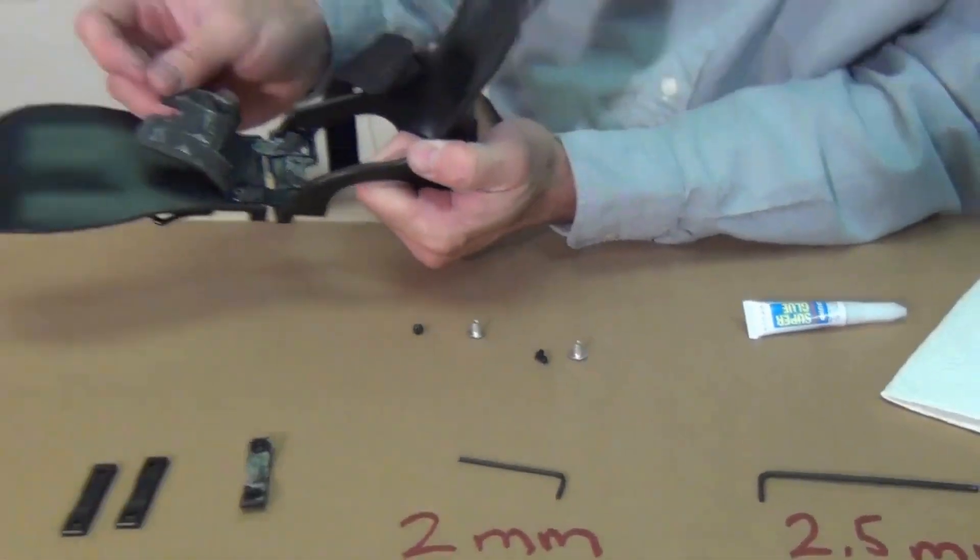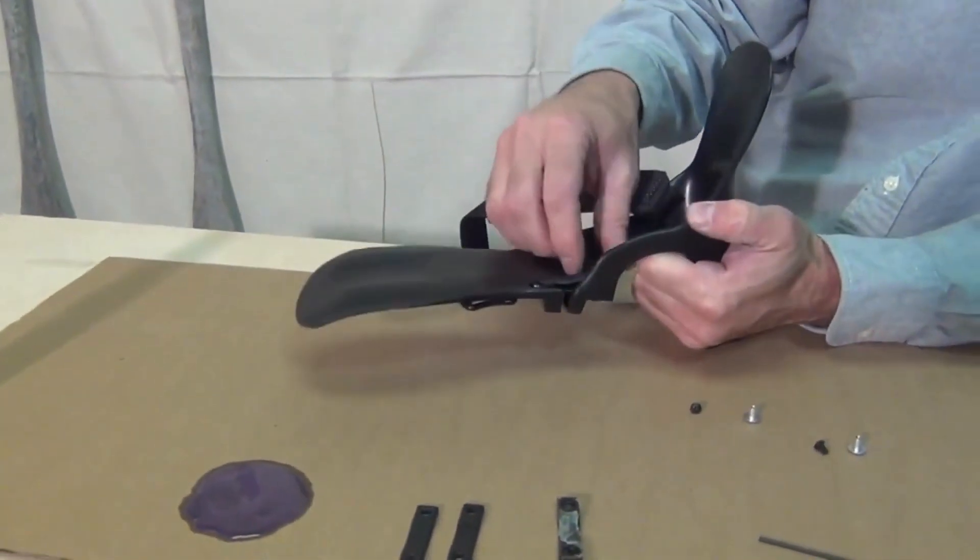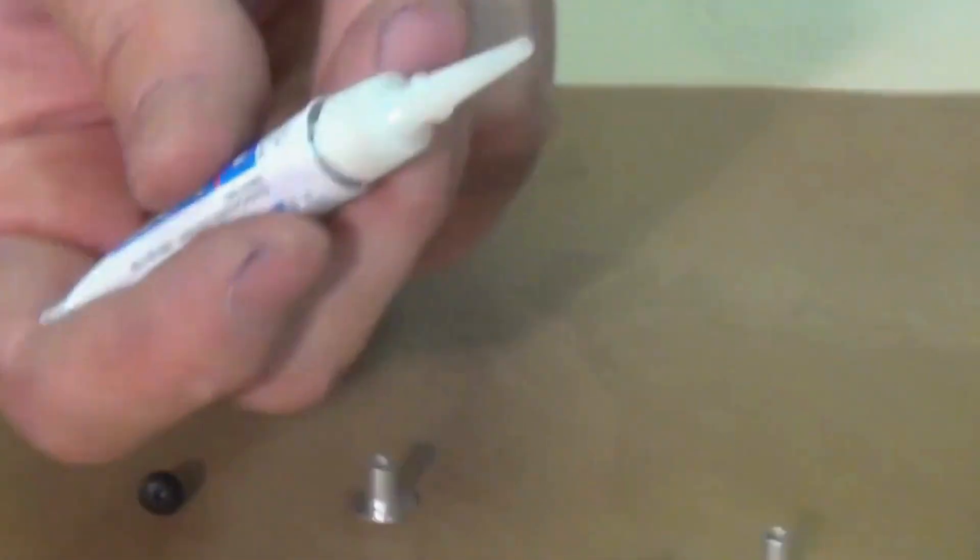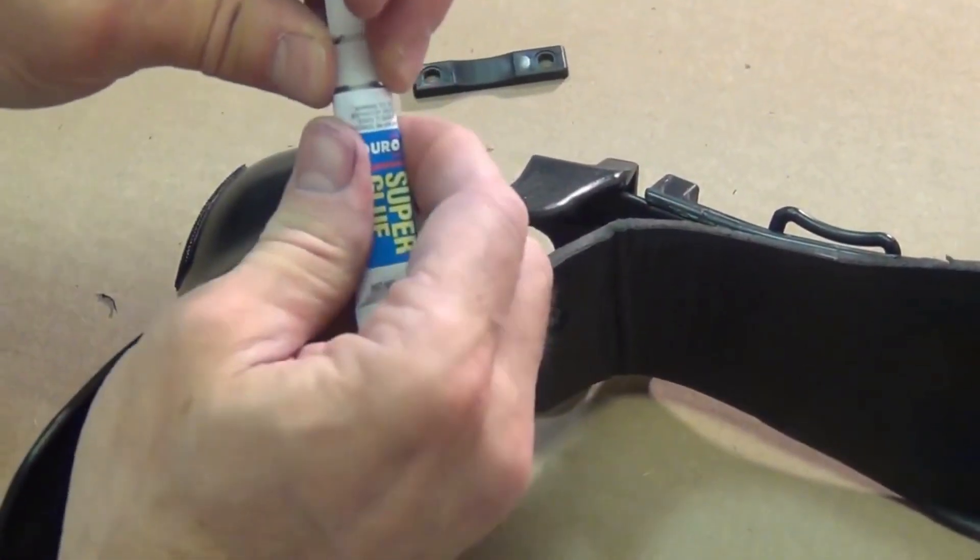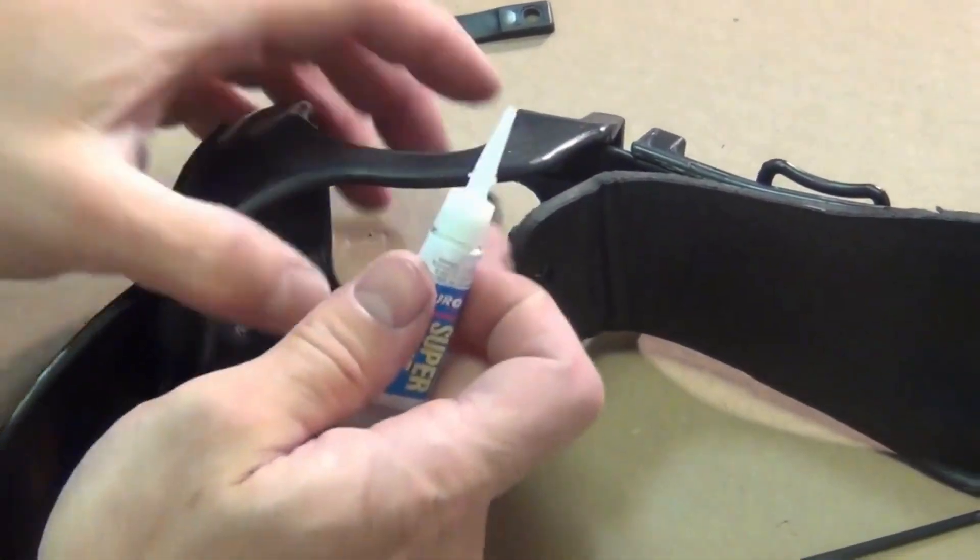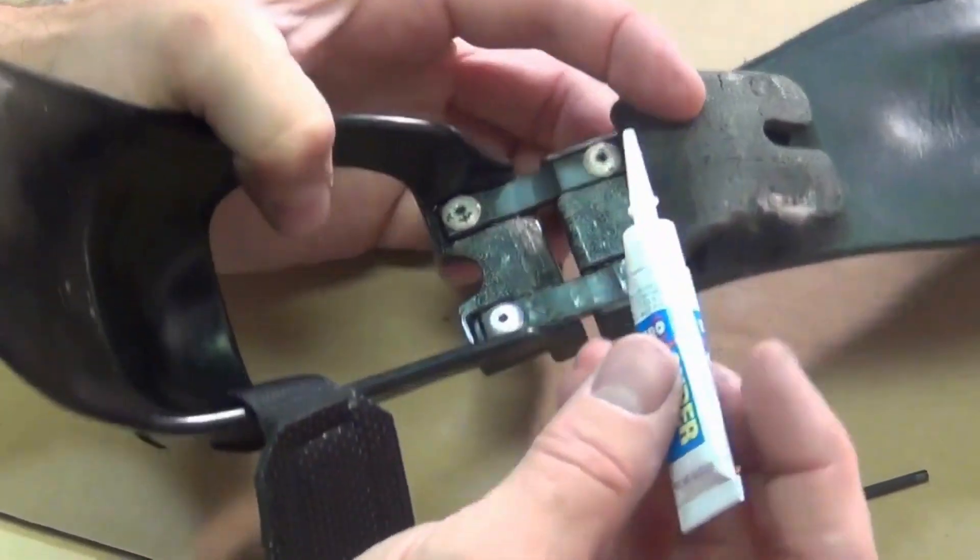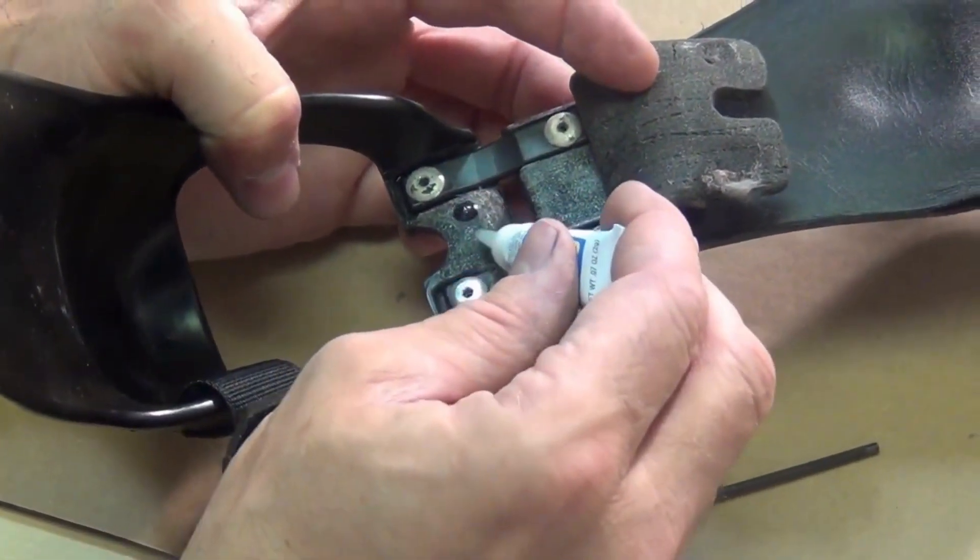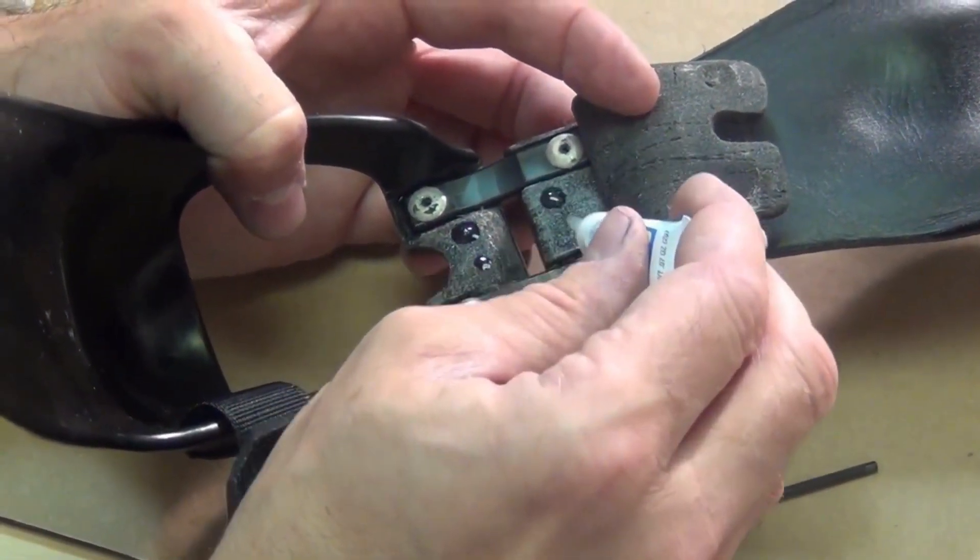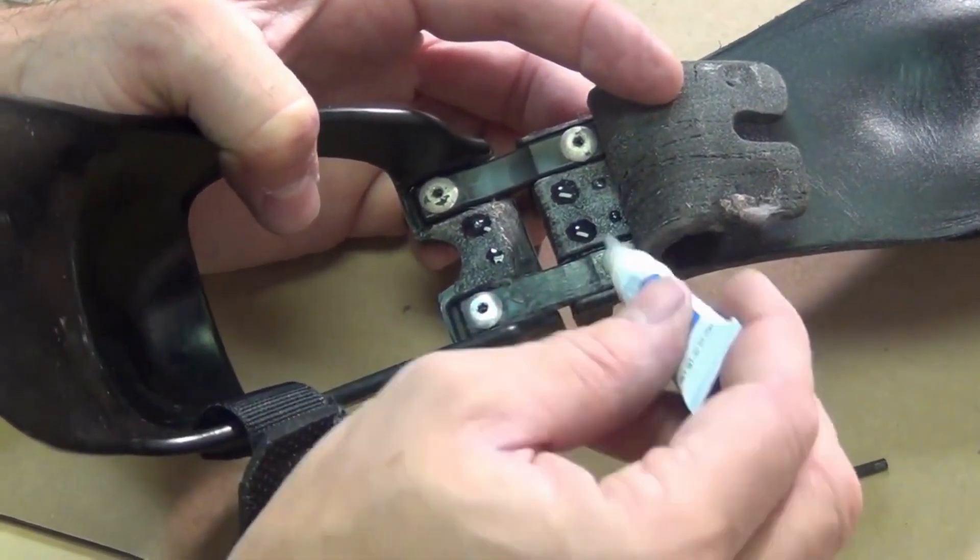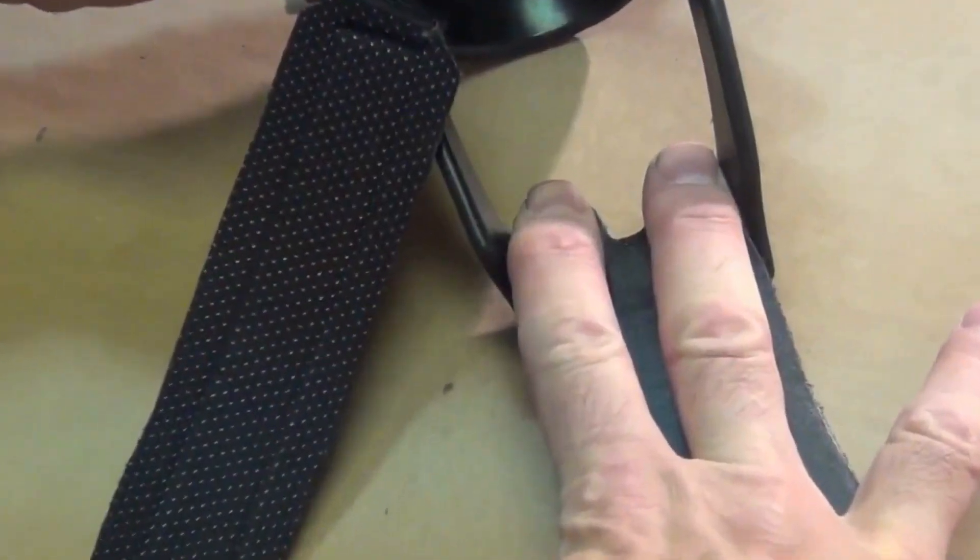Now we're left with this problem here. So we just want to stick that back down. At the hardware store, I got the super glue. You don't want to put super glue all over the place, you don't need much. A spot here, here, here, here. I wouldn't put it anywhere around these screws. So just press that down, give it a little bit of pressure.